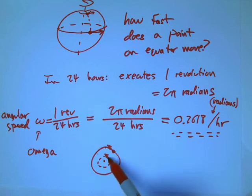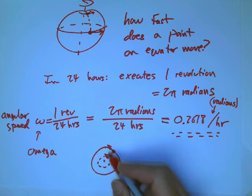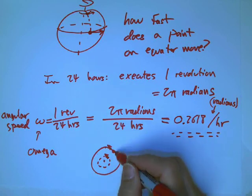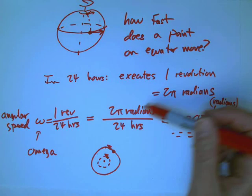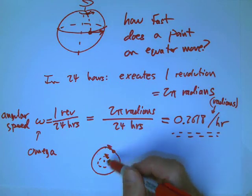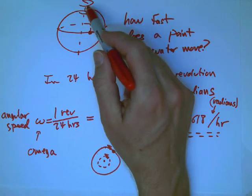But what's not going to be the same is their linear speed, which is the usual measure of speed, like centimeters per second or meters per second or kilometers per hour. Because this guy is going further in the same amount of time. This guy is going less far in the same amount of time.